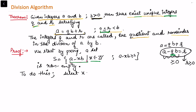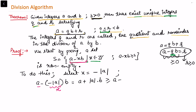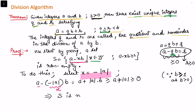To show S is non-empty, select x = −|a|. Then a − xb = a − (−|a|)b = a + |a|b. This is always greater than or equal to a + |a|, because b ≥ 1 since b is strictly positive. And a + |a| is a non-negative quantity. So with this choice of x, the element a + |a|b belongs to S, which shows S is non-empty.